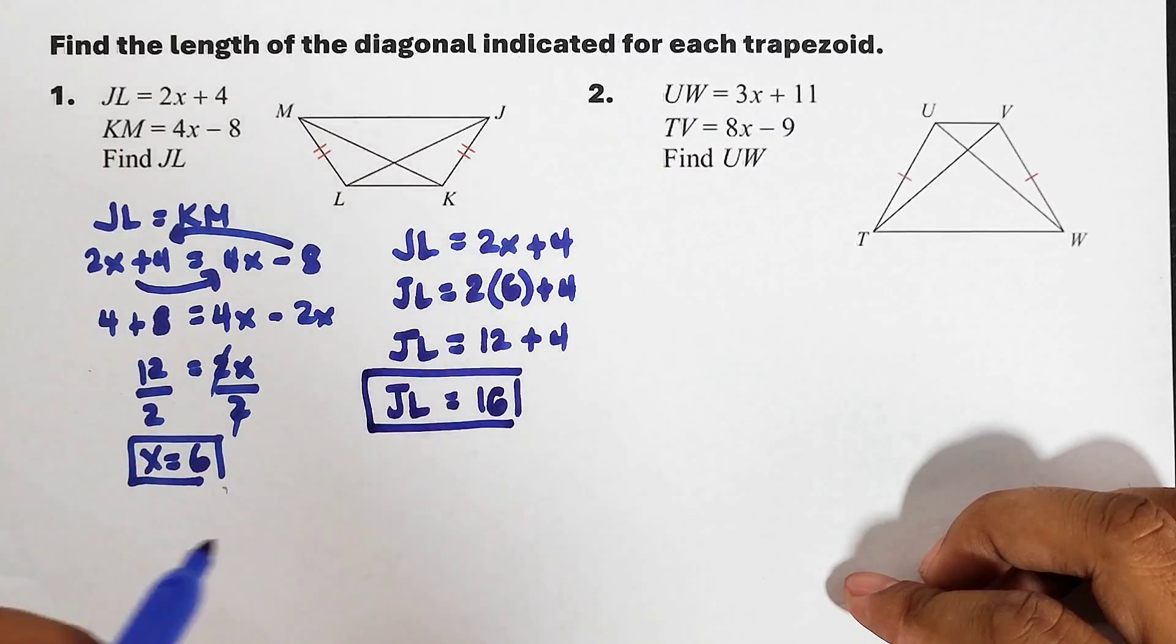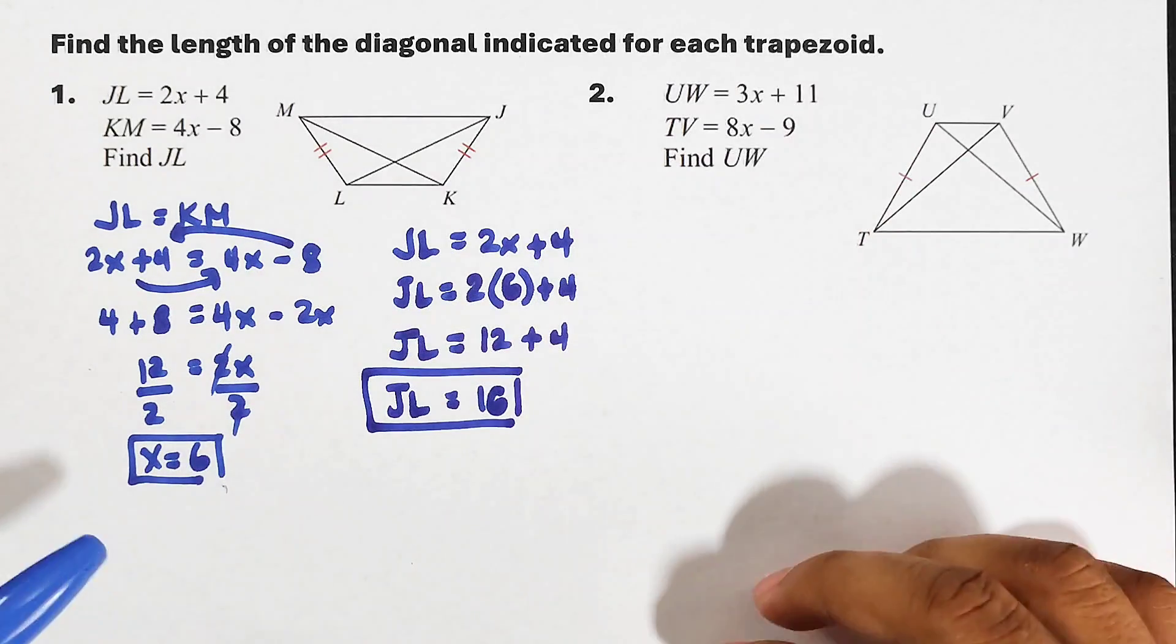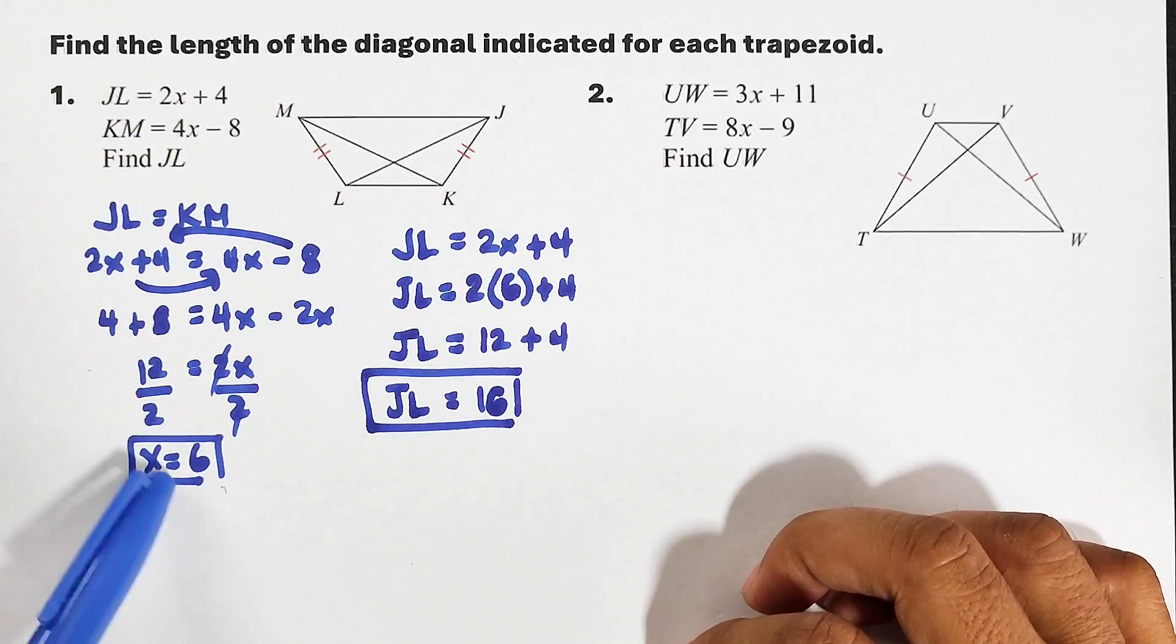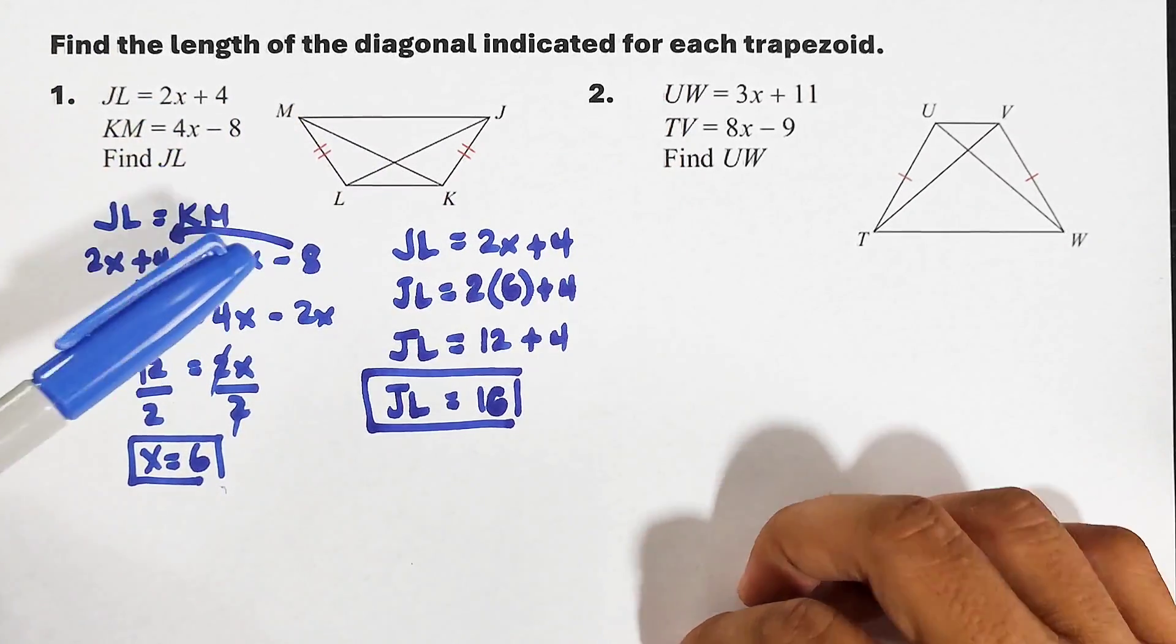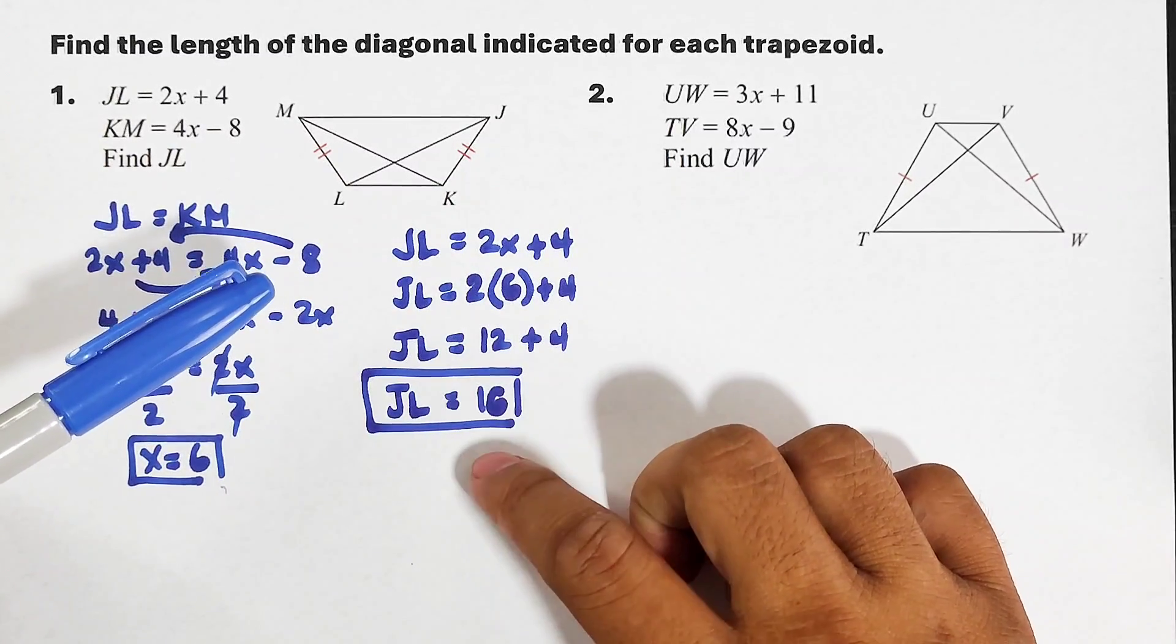And this is the answer, guys. So how long is JL? We have 16 units. Now if there's another question asking for the measurement of MK, we can substitute 6 here for 4x minus 8. Since diagonals are congruent, meaning MK or KM has the measure of 16 units also because they are congruent.